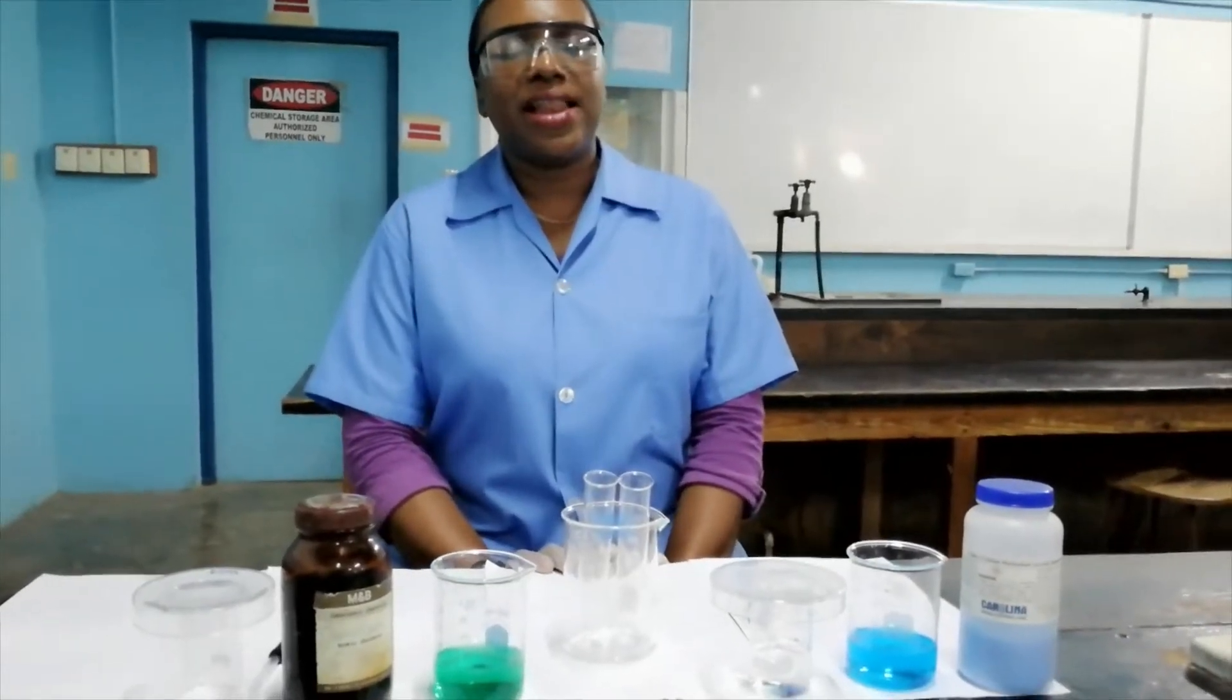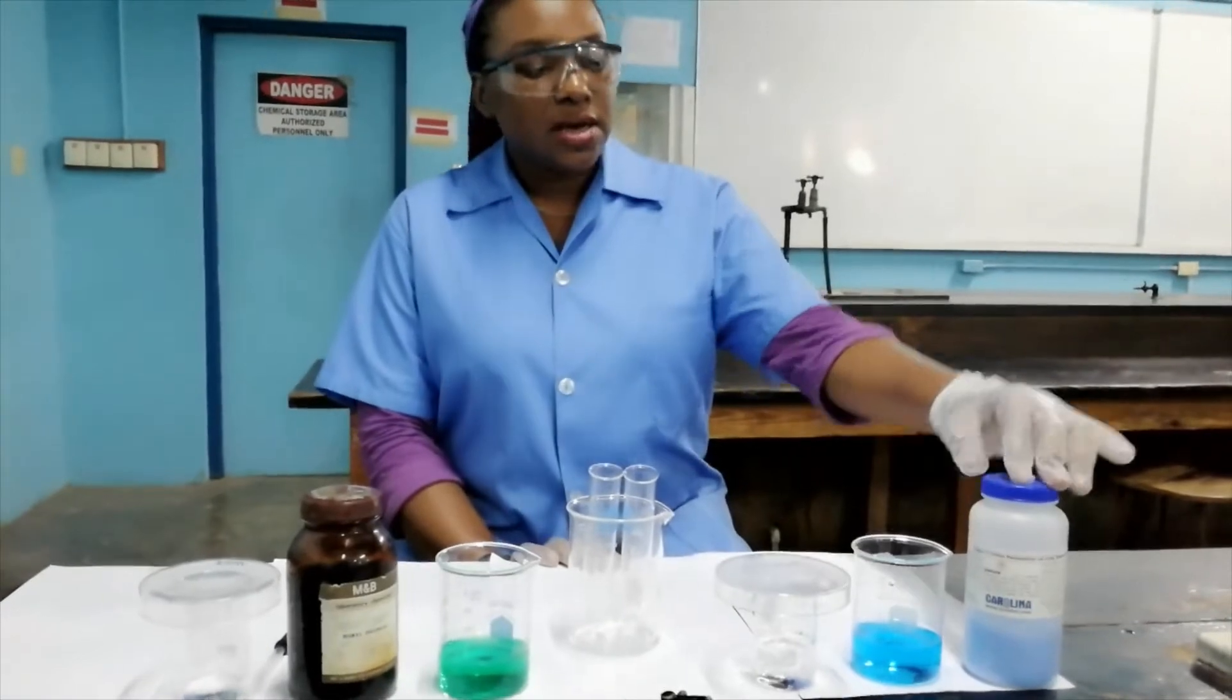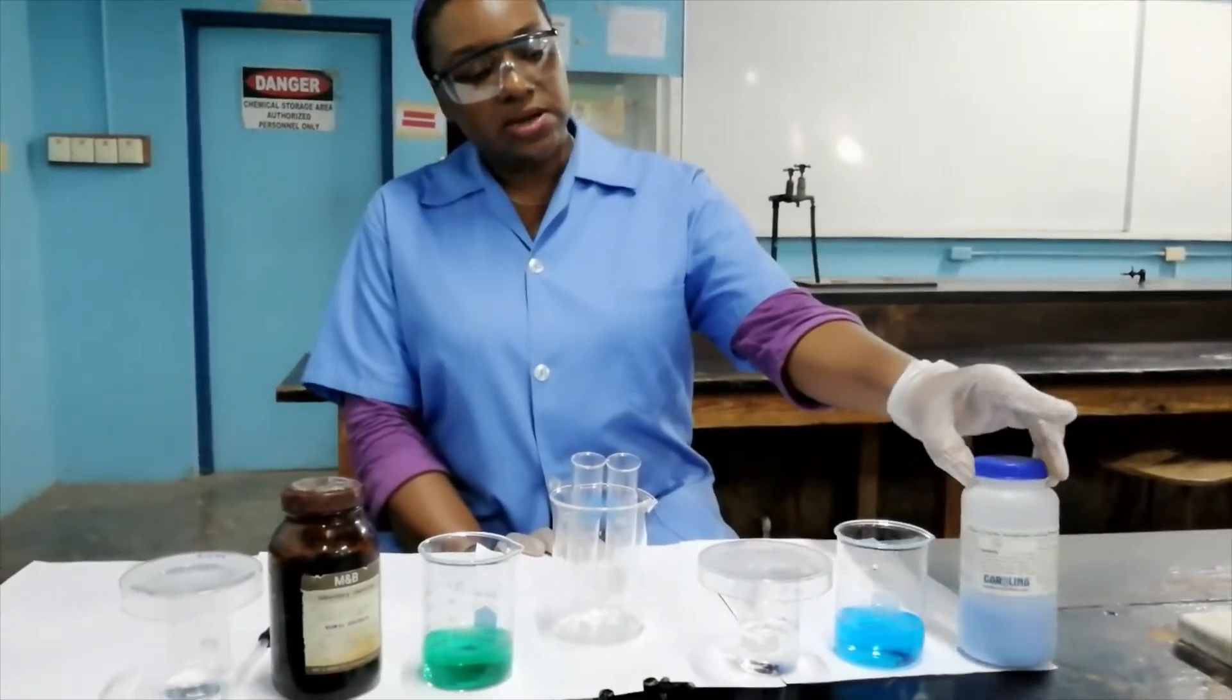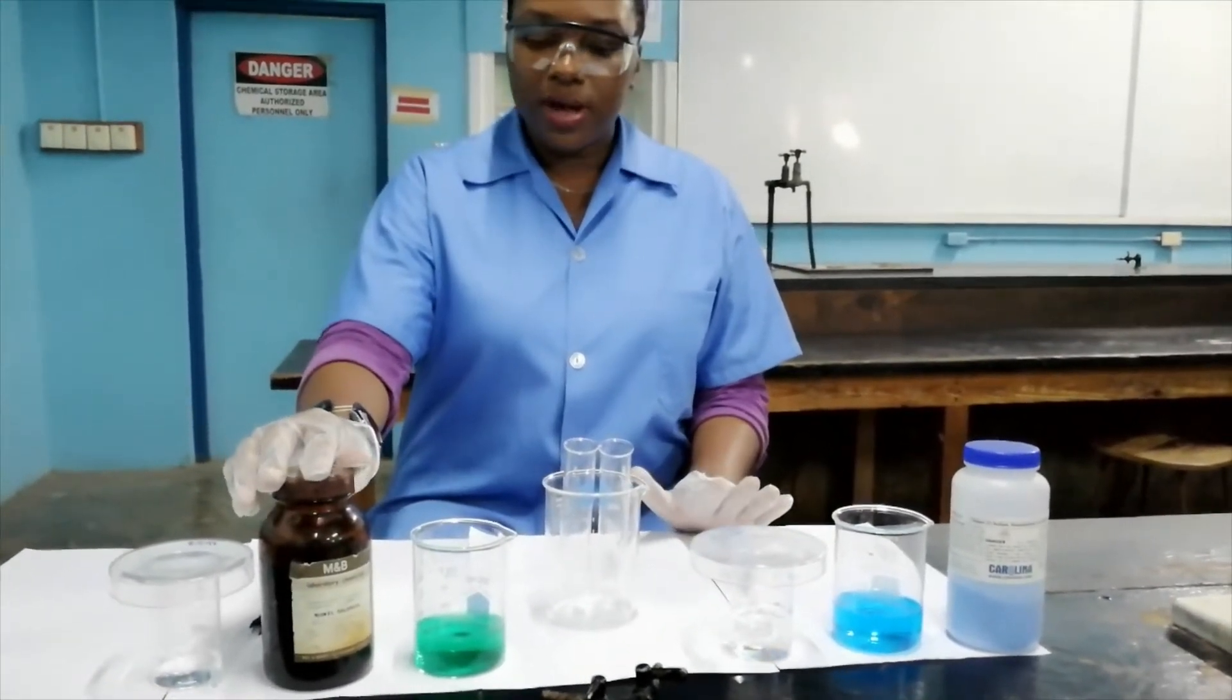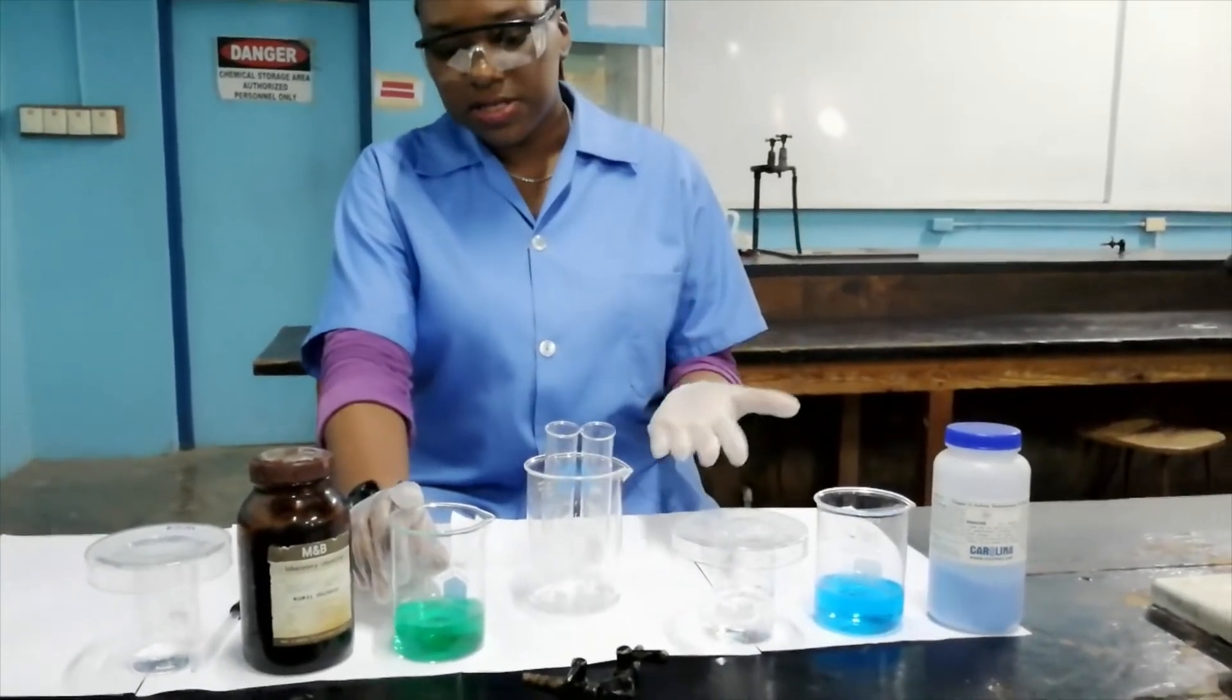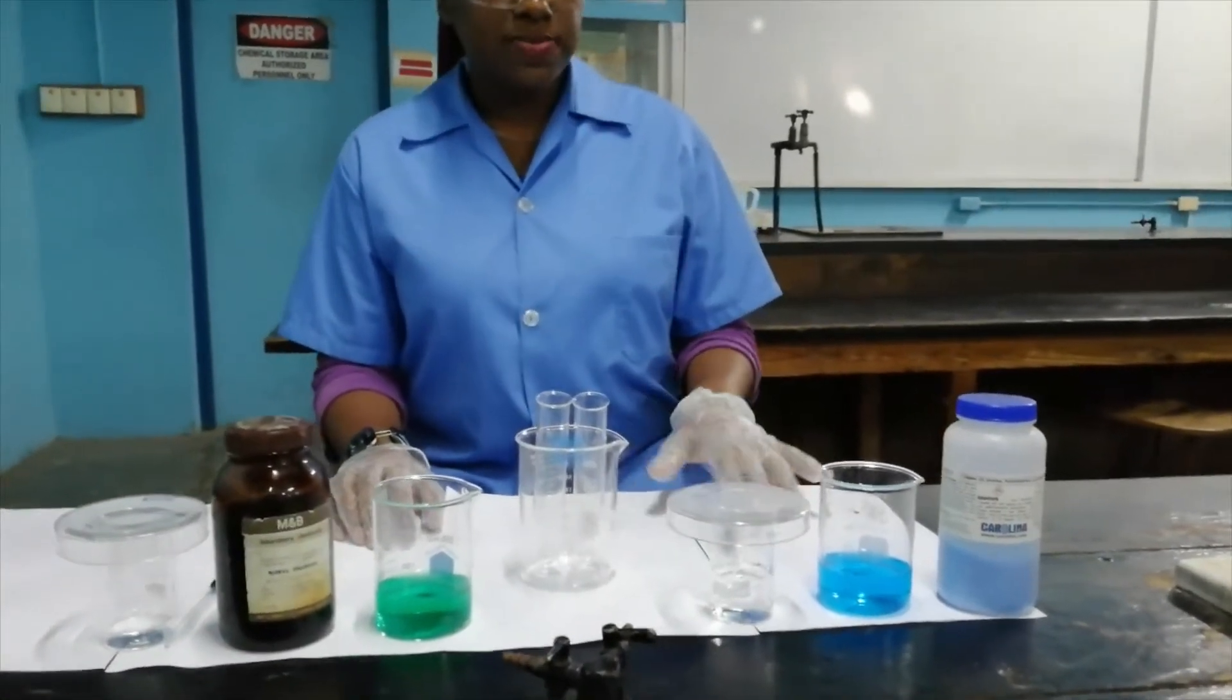Hi everyone, today we're going to look at ligand exchange reactions using two materials. The first is copper sulfate solution - we dissolved these crystals in water to form this blue solution. The next is nickel chloride that we've dissolved to form this green solution, and the solvent is water. These are two first row transition metal ions. Let us begin.